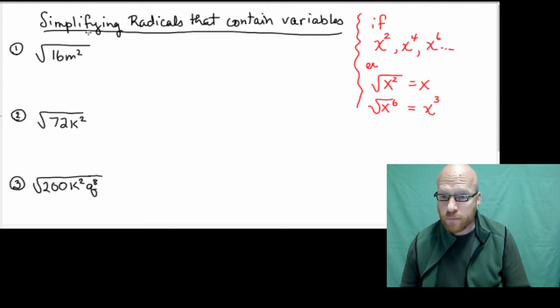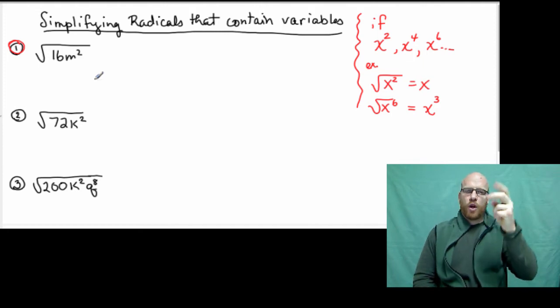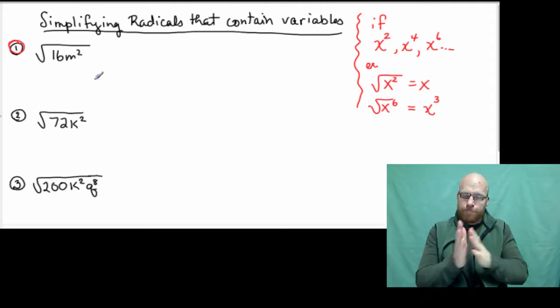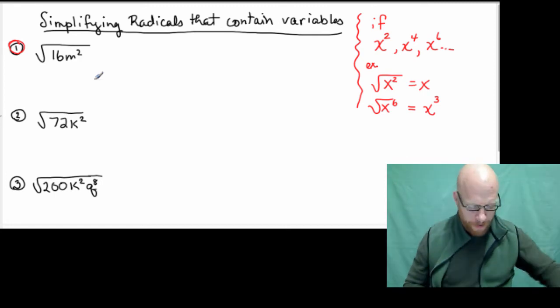Like here's our examples. Now, 16m squared. 16, the square root is 4. m squared has a square root also. Now what is it? m squared, the square root is m. Now here's what it means to us.